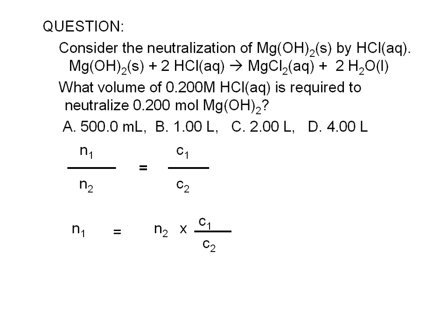We can rearrange this equation to solve for n1 if we know n2. To calculate n1, we simply multiply n2 by the ratio of coefficients.